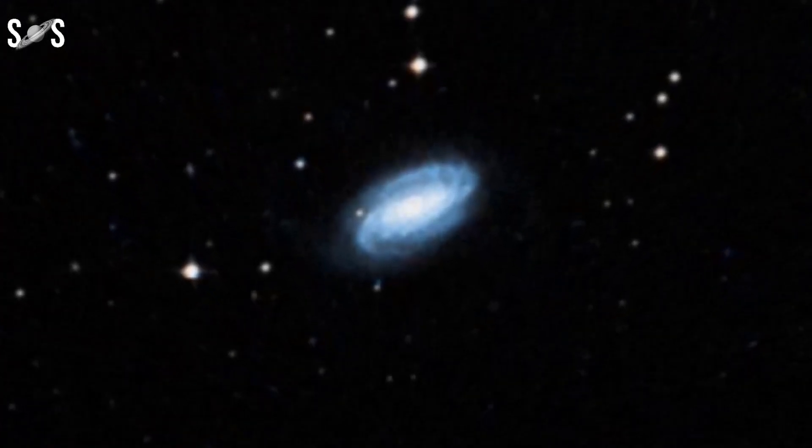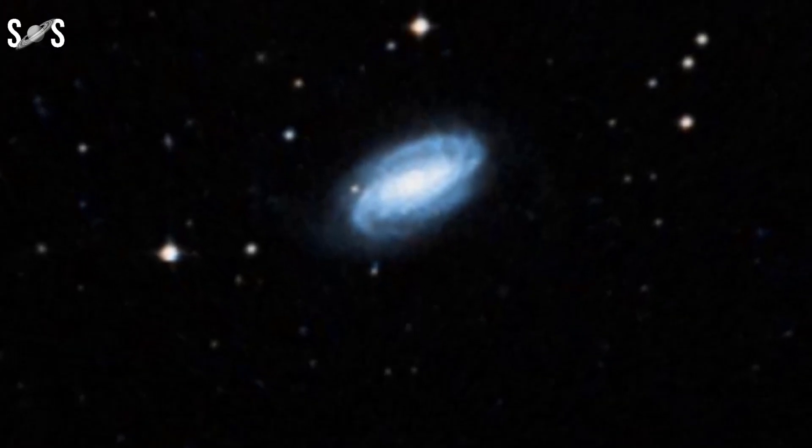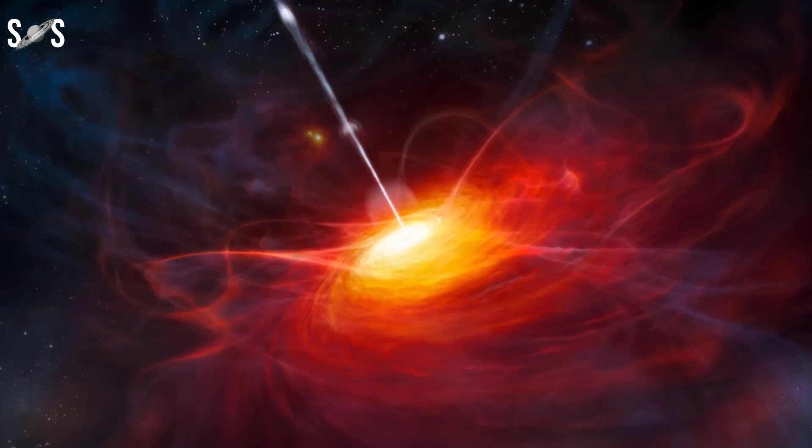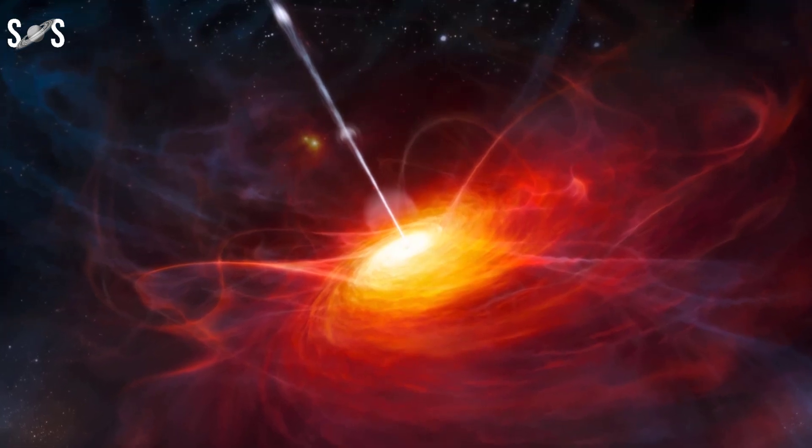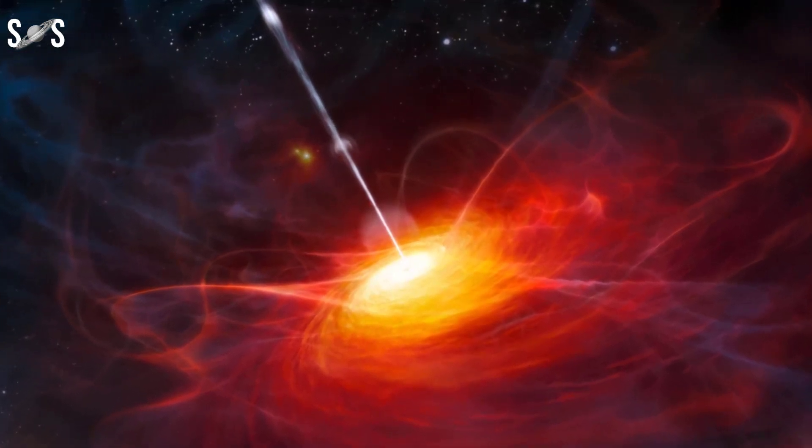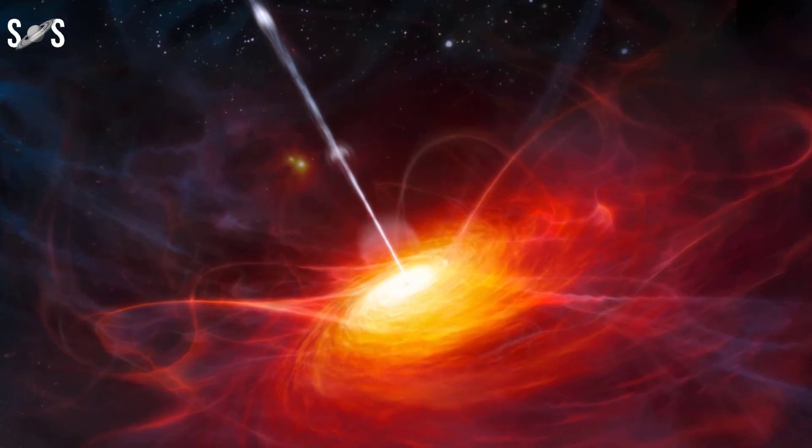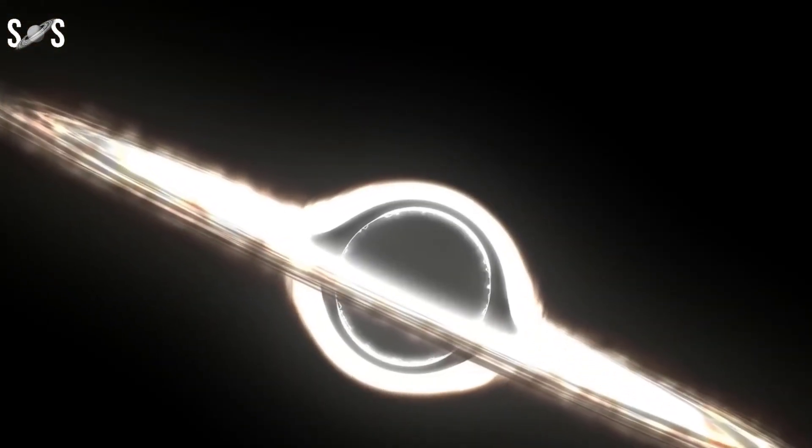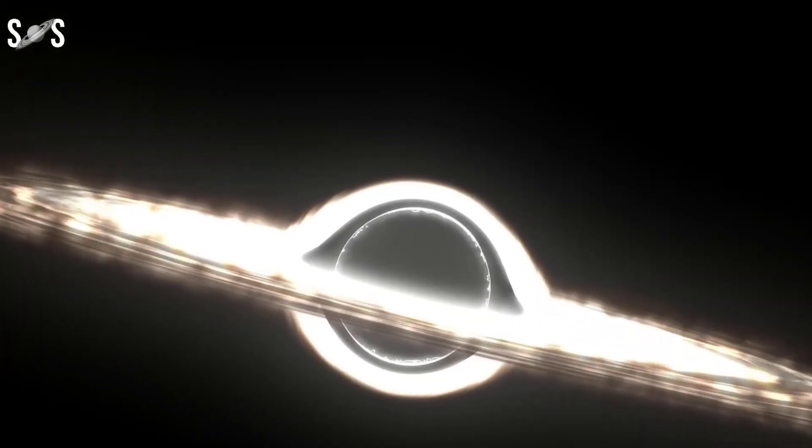NGC 7392 is a blue galaxy, churning out many new stars and creating a lot of dust in the process. This dust could make it difficult to view the supermassive black holes in optical and ultraviolet light. And one would expect black holes to eat most stars in blue galaxies that constantly churn out new stars.